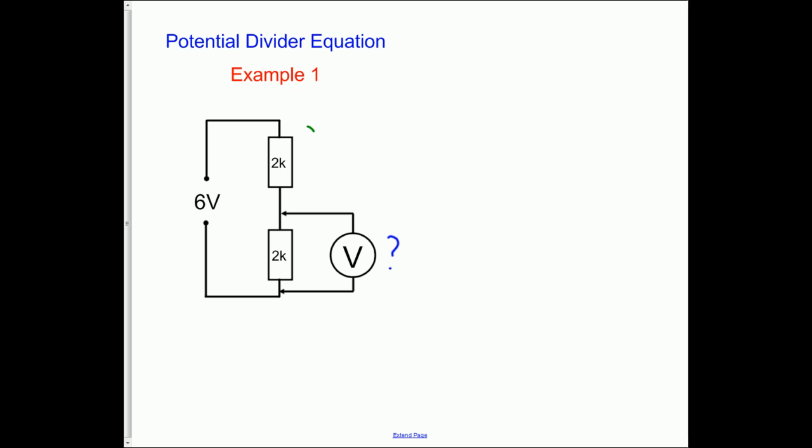So looking at it here we've got this voltage V1 and this voltage V2 which is what we're trying to find. We can see straight away that this is easily done by ratios. So the ratio of R1 to R2 is simply 2k to 2k which reduces to 1 to 1. They're the same.